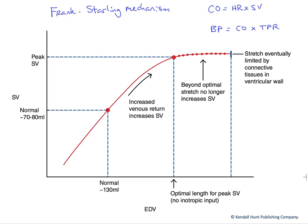Stretching enhances the number of crossbridges that are formed, enhancing the degree of tension, and in this case increasing our stroke volume. We're plotting stroke volume relative to our EDV — our end-diastolic volume. End-diastolic volume is the filling volume, and therefore directly proportional to the stretch of those cardiomyocytes. It's also referred to as the preload on these cardiomyocytes.